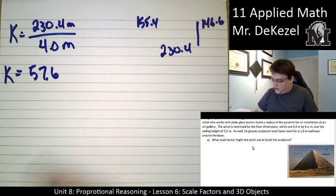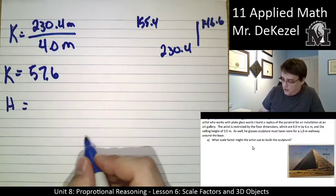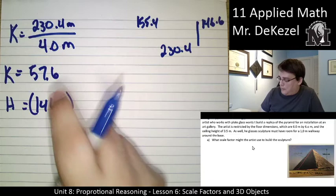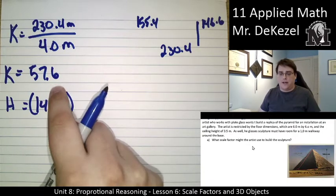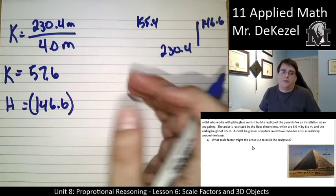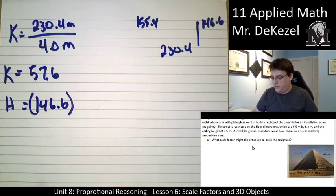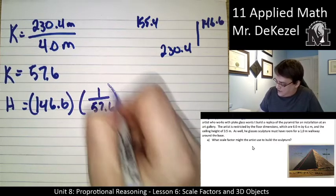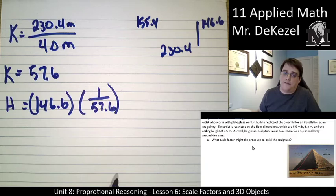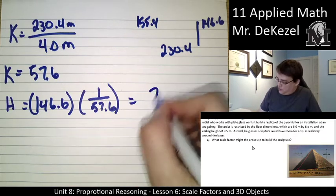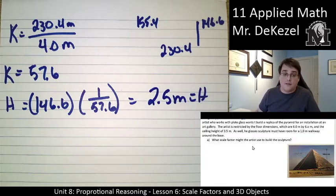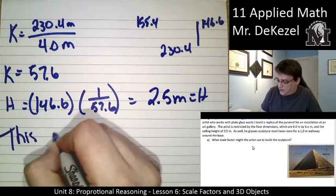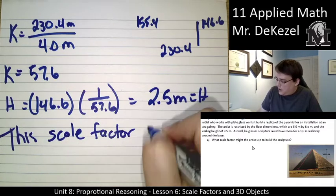So, let's find out. For the height of the sculpture, we want to make the number smaller. So, the number we're given is 146.6. So, we can't multiply it by this number because it would make it larger and that would not fit in the room. We want to make this number smaller, just like we did with our other one, to see if it will fit. So, I need to multiply it by 1 over 57.6, or essentially divide it by 57.6. And I get 2.5 meters for a height. So, 2.5 meters is less than 3.5. So, then this scale factor actually works well.